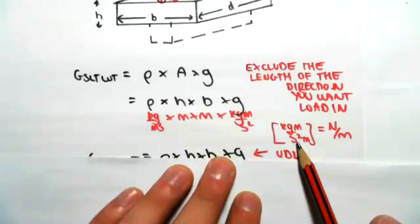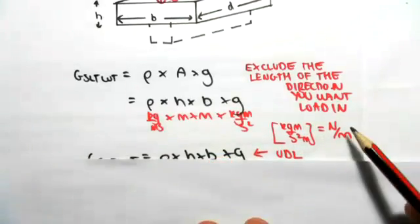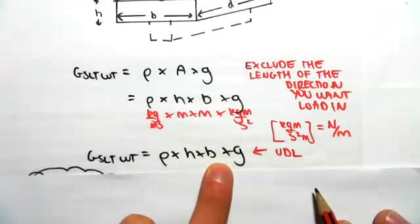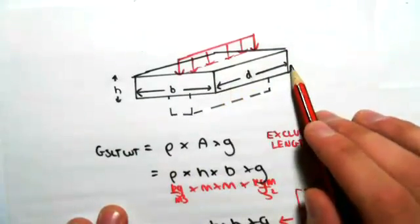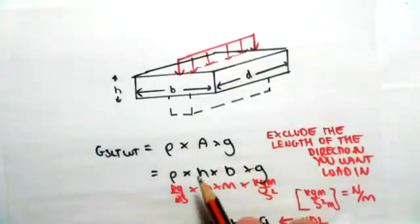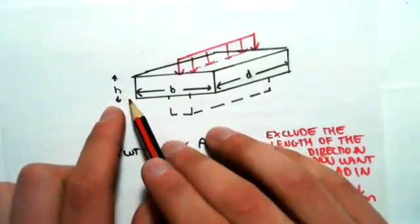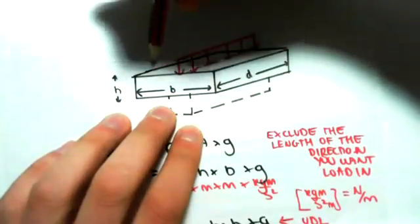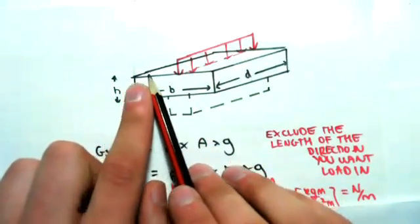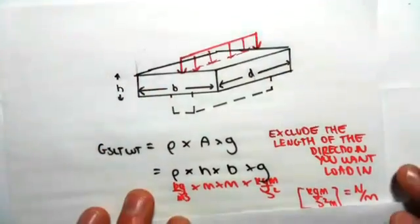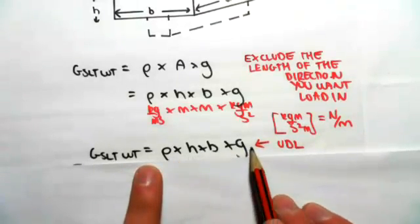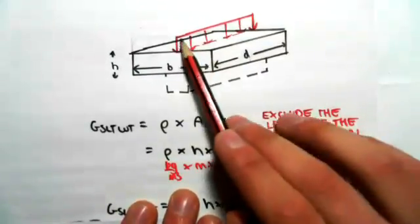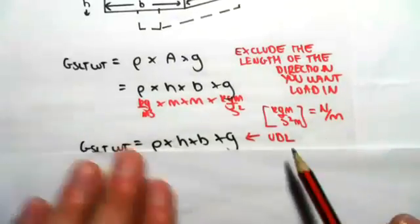Unit wise, we get kilograms, metres, seconds squared on metres — which is a newton per metre: a linear load. So rho times h times b times g gives us a UDL. It might not seem intuitive why you exclude that length, but if you exclude it, it gives the UDL in that direction. If instead we multiplied by h times d, we would have a UDL going in the opposite direction — along that edge, not along that one. So just exclude the length of the direction you want the load to go in. Normally we're going to be using this procedure: density times h times b times gravity, where you just need to know which way the load is going and identify what h and b are for your particular problem. We're going to get a UDL.